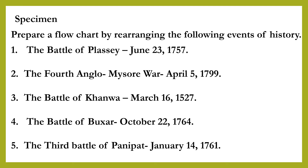You can see that all these events are not arranged in order. So the first thing we will do is to arrange them in rough — you can do this with a pencil. We will begin with the events that took place first among those given here. So the first event is the third one: the Battle of Kanwa, which took place on March 16, 1527. We will tag this event with number 1. This is only the rough work that I am doing.